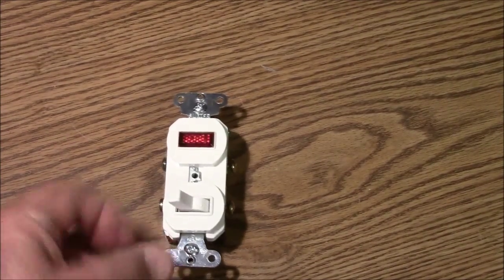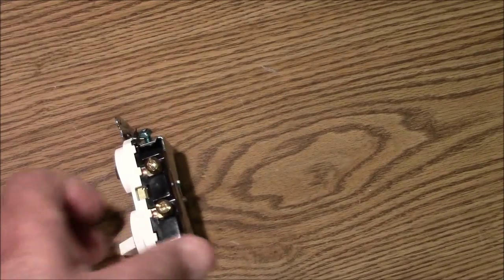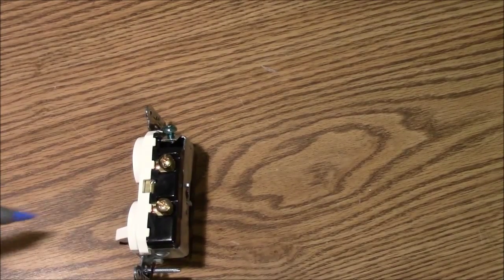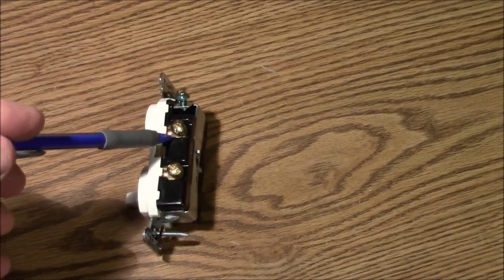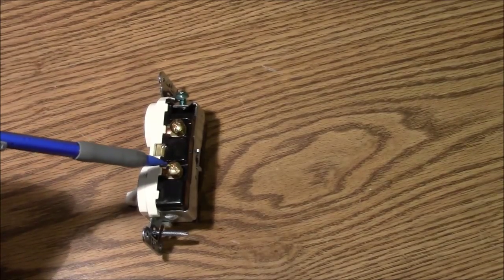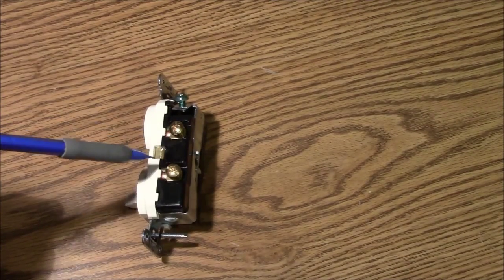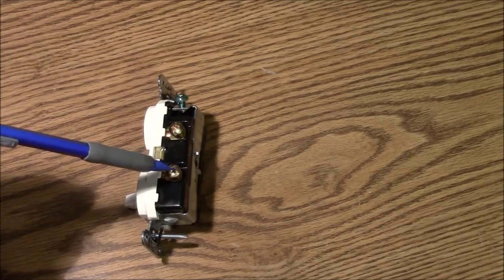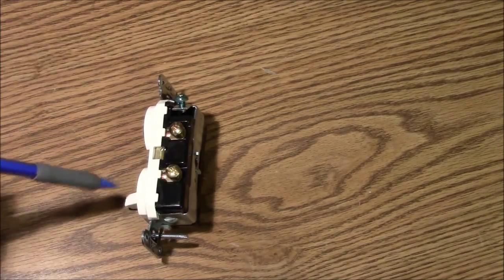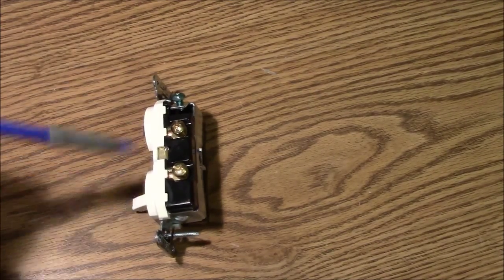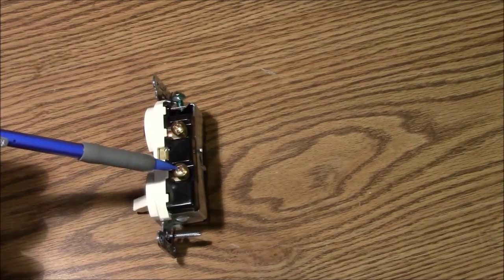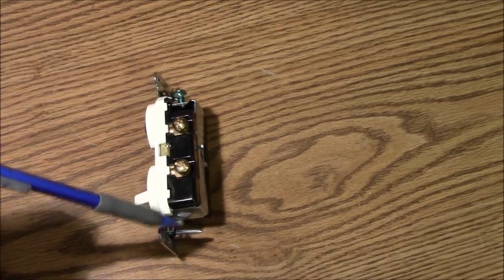Turn it over again, once again with the switch on the bottom. You'll notice that these two screws are both brass-colored. This is where you hook the load or your lamp, fan, outlet, whatever it is you're trying to power and control through the switch. You hook it up here. That could be a black wire or a red wire.